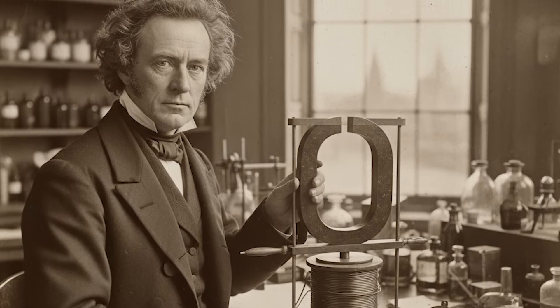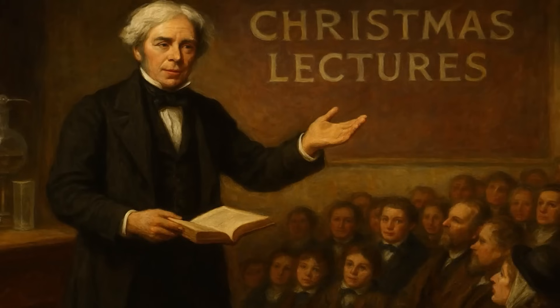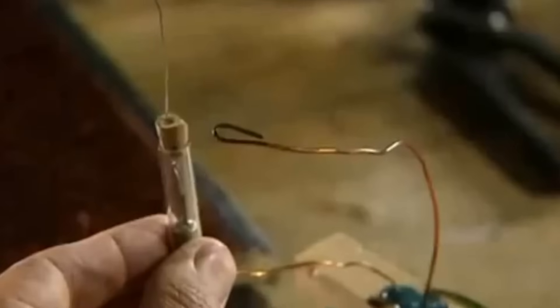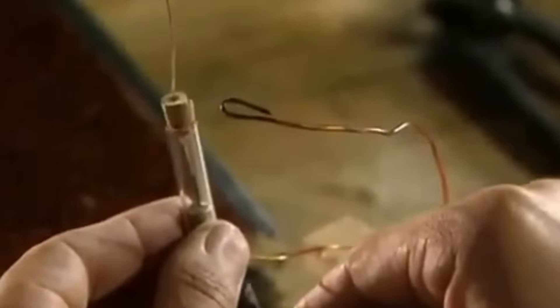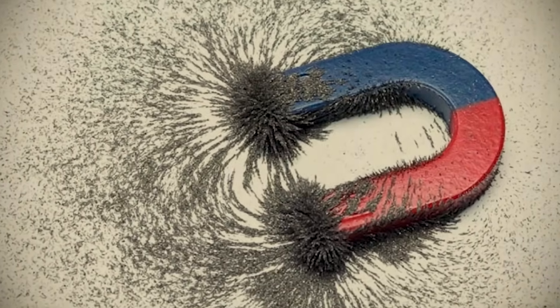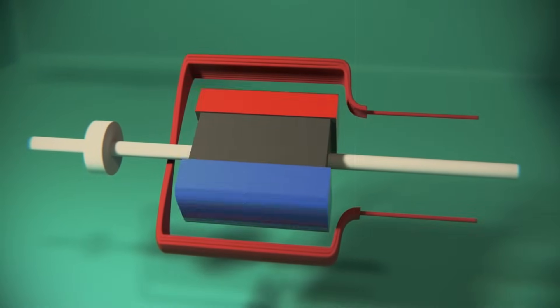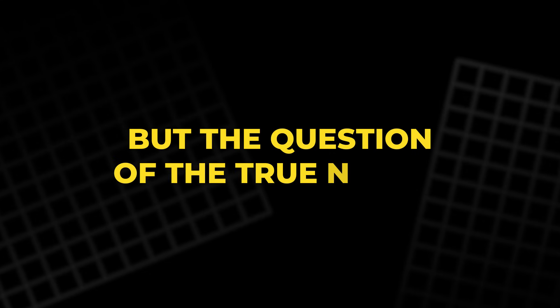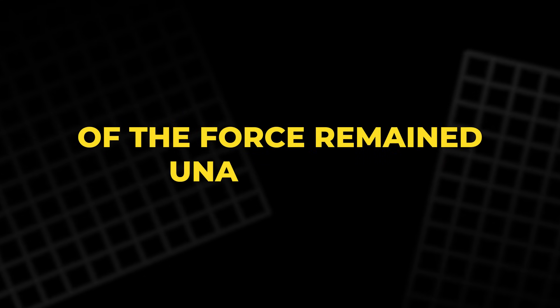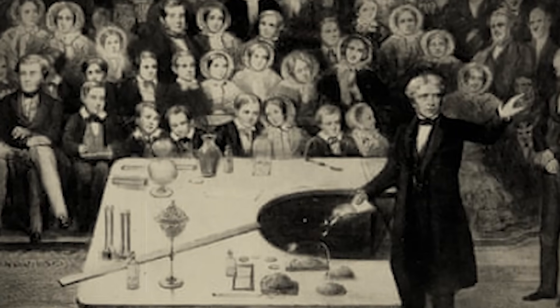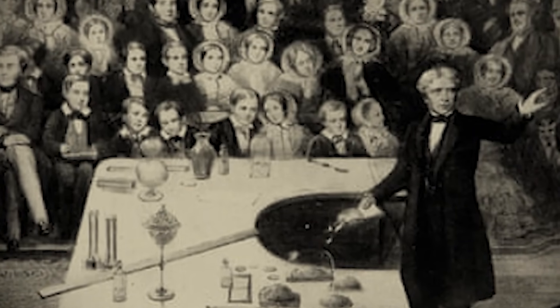Faraday's scientific approach was methodical and rigorous. He carefully documented his experiments and observations in great detail, ensuring that every possible variable was accounted for. Through his experiments, Faraday demonstrated that the strength of the induced current could be increased by using stronger magnets, increasing the number of coil windings, or moving the magnet more quickly. His work laid the foundation for future developments in electrical technology, but the question of the true nature of the force remained unanswered. Faraday could observe the effects of this force, but he could not fully explain its origins.